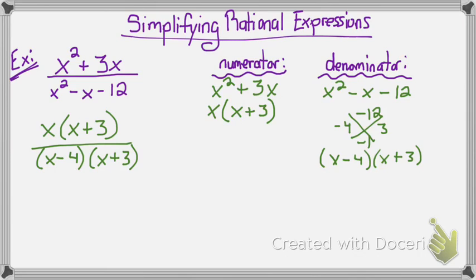Now I've got to look at my rational expression now that it's factored out and say, is there any common factors in the numerator and the denominator that will divide into each other? There are. I have an x plus 3 in both the numerator and denominator.